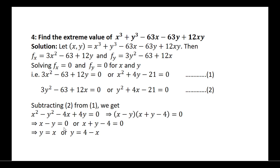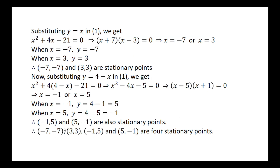Substitute y equal to x in equation 1. You get the values of x as minus 7 and x equal to 3. When x equals minus 7, y is also minus 7, and when x equals 3, y is also equal to 3. Therefore, the stationary points are (−7, −7) and (3, 3).